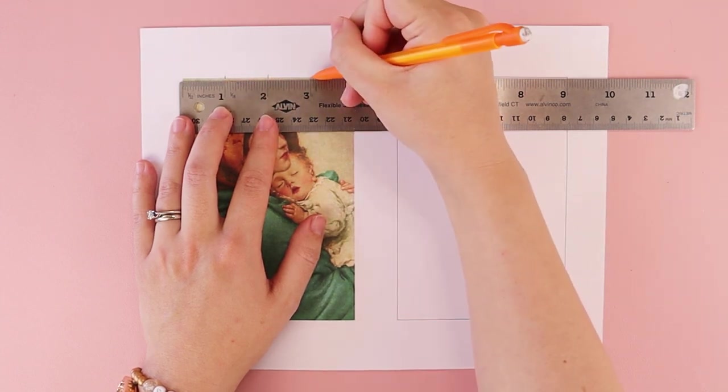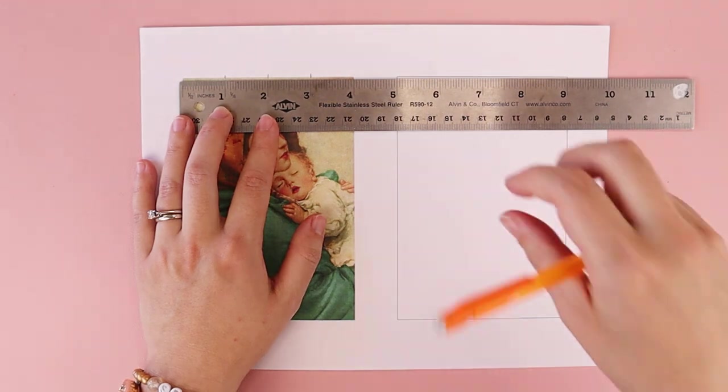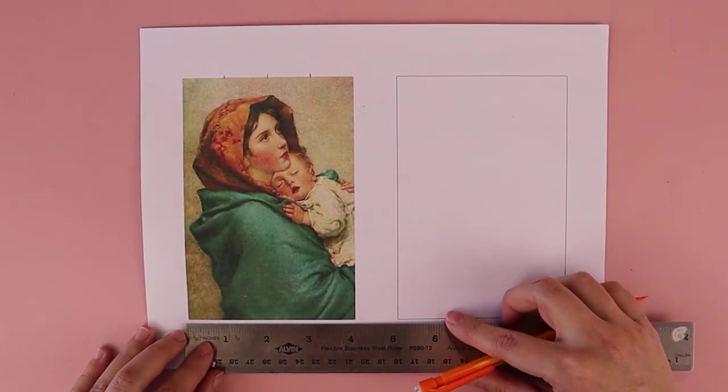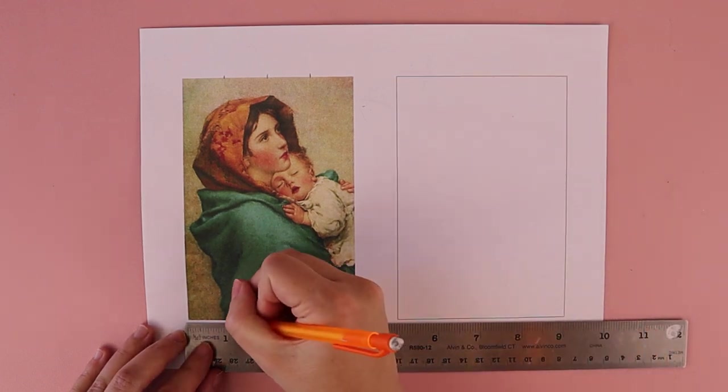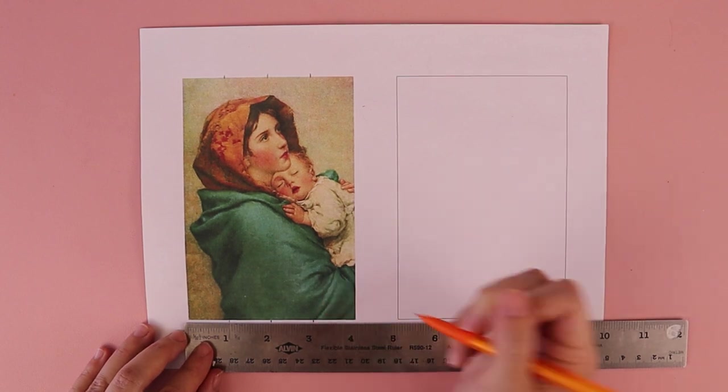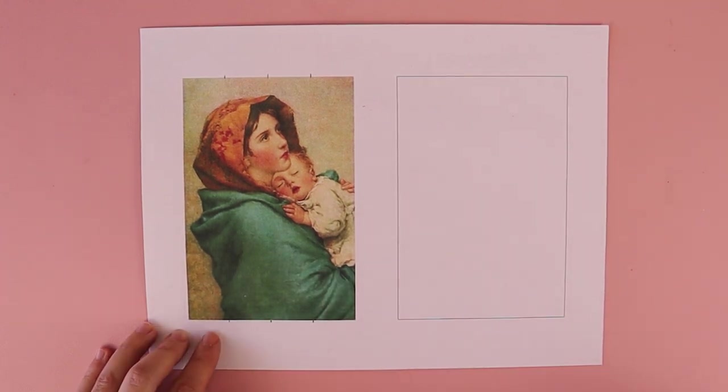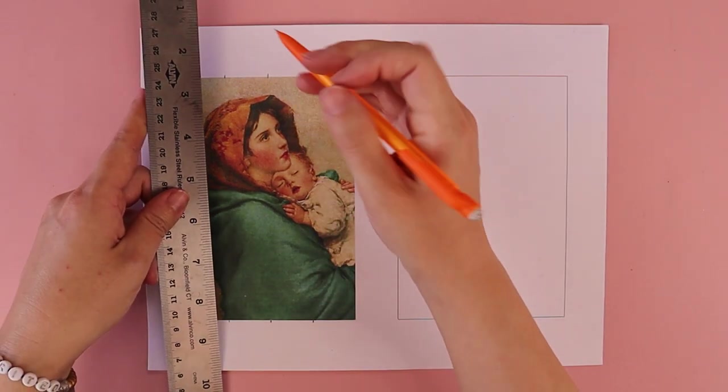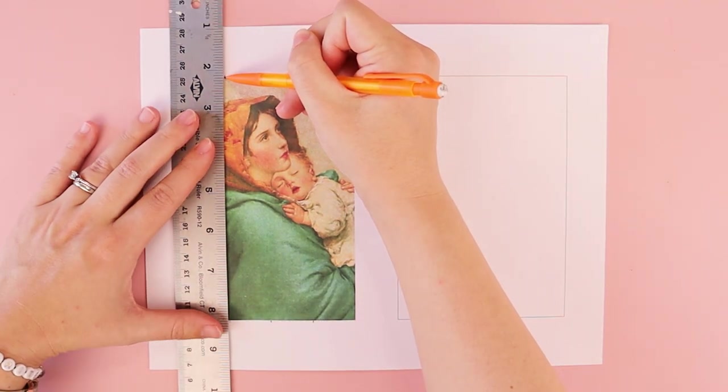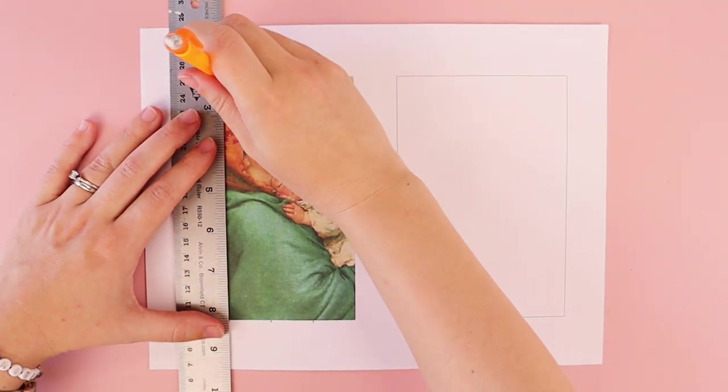So one, two, and three inches. And what I like to do is I like to do the same little marks down at the bottom. One, two, three. And the reason I do that is so that I can match up these marks that I made and connect the dots.